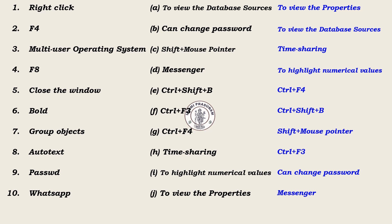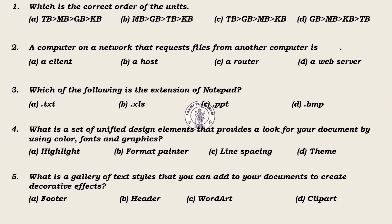Now, choose the best answer. 1. Which is the correct order of the units? Options: TB, MB, GB, KB — or — MB, GB, TB, KB — or — TB, GB, MB, KB.